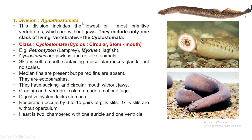The first division, Agnathostomata, includes the lowest or most primitive vertebrates — they are without jaws, as you can see in the picture. This division includes only one class of living vertebrates: Cyclostomata. Cyclos means circular and stom means mouth, so these organisms have a round or circular mouth. Examples are Petromyzon and Myxine. Cyclostomes are jawless and appear like eel.